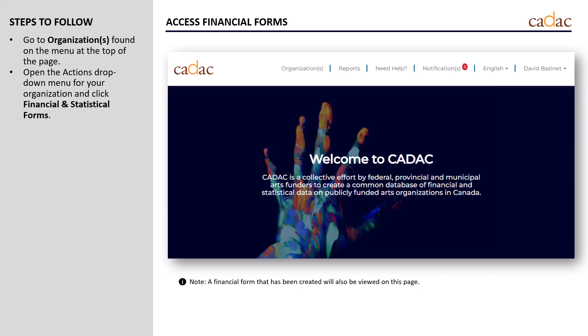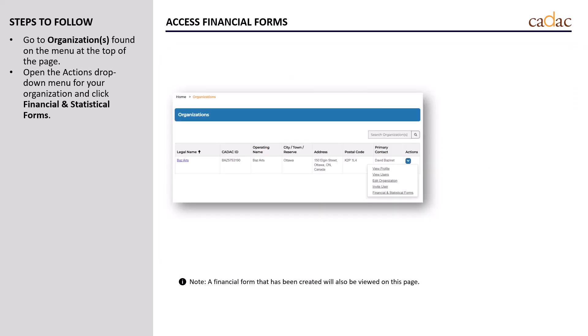To attach financial statements, we need to access the financial forms page. After logging in, click on Organizations in the top menu. Open the Actions drop-down menu for the appropriate organization, and click on Financial and Statistical Forms.